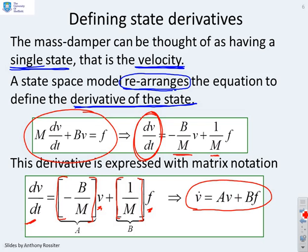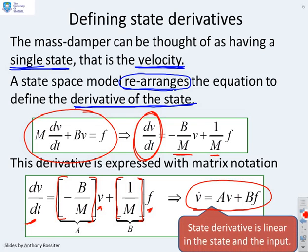The key thing is the state derivative is linear in the state and the input. You'll see the derivative here, V dot. It's got some matrix times V, so it's linear in the state. And some matrix B times F, so it's linear in the input.